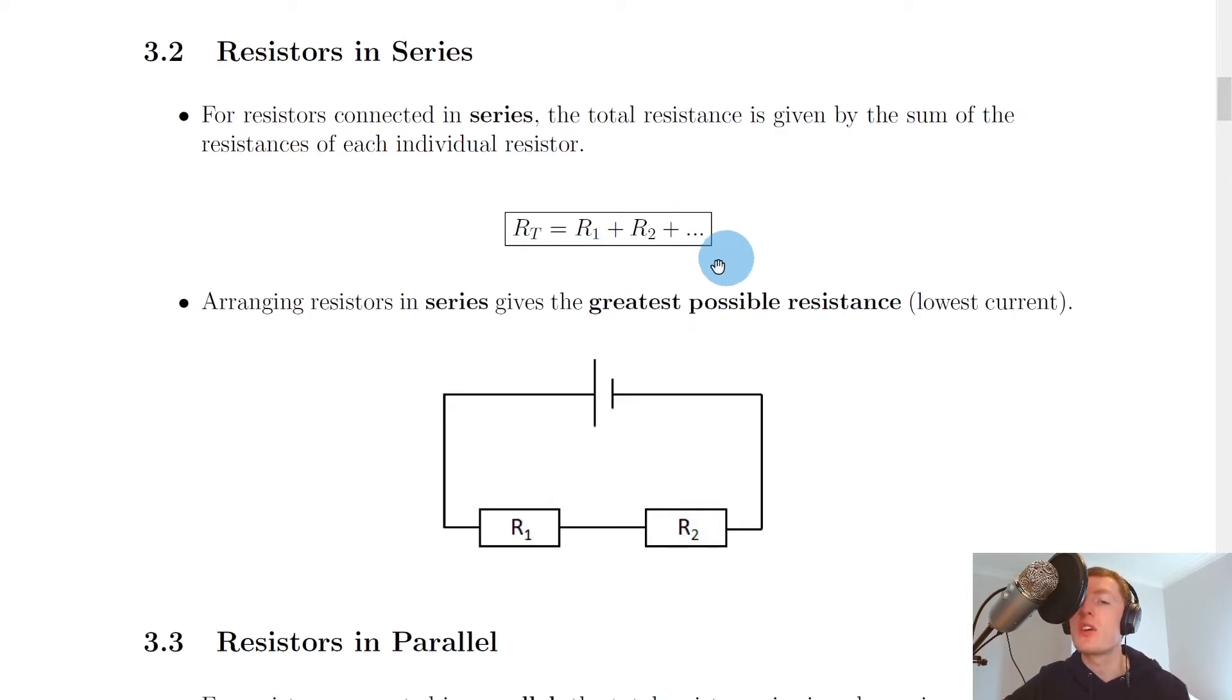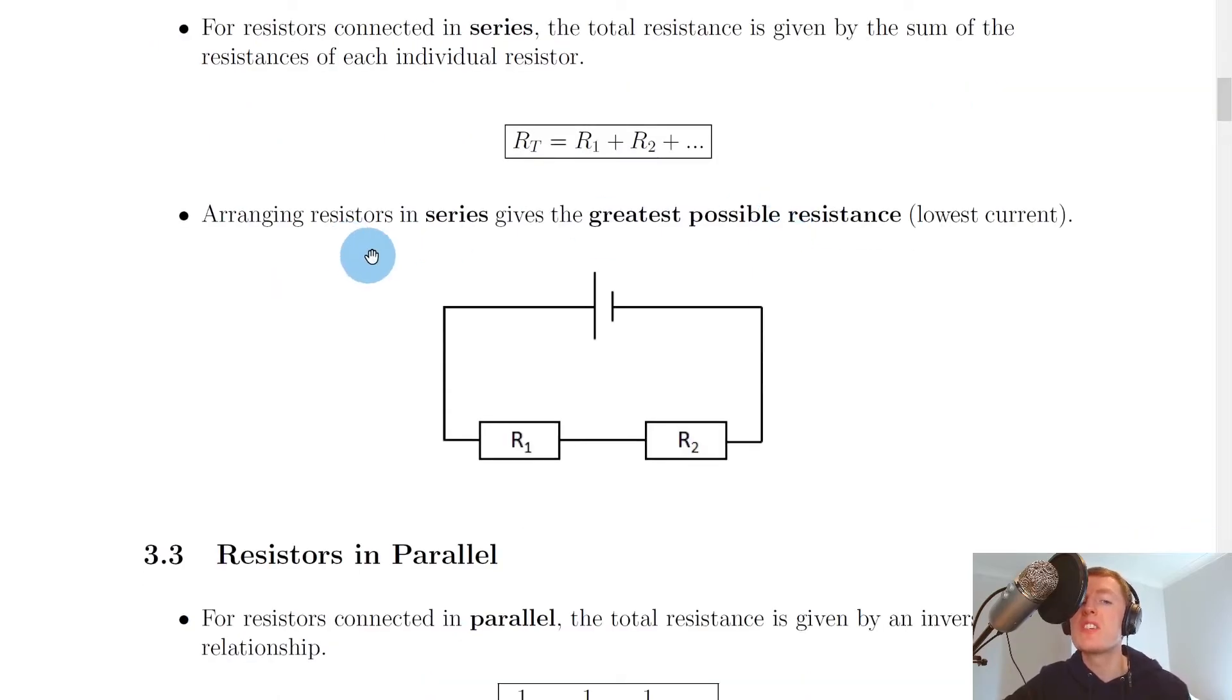If I had four resistors in my circuit for example, I would do R1 plus R2 plus R3 plus R4, and I would stop at R4 because I've only got four resistors. We can also say that arranging resistors in series gives the greatest possible resistance.